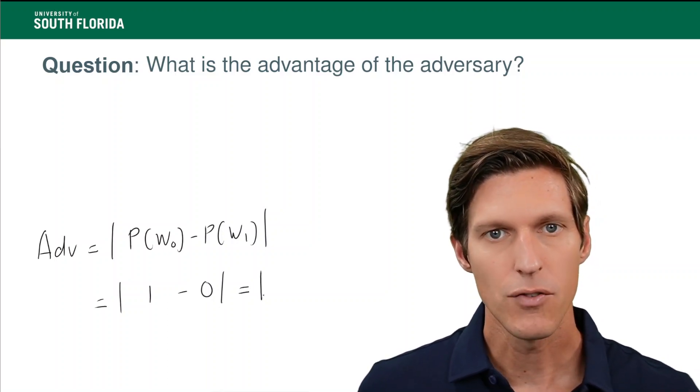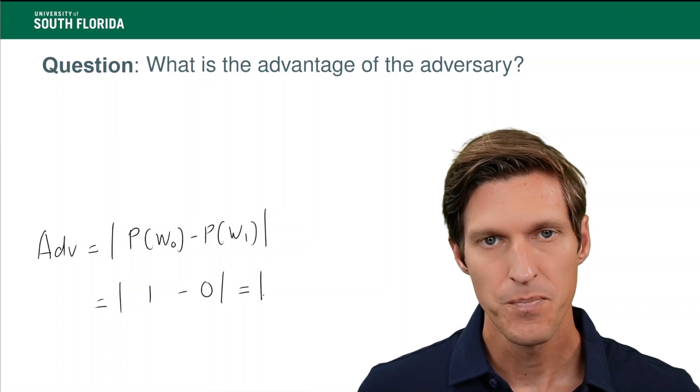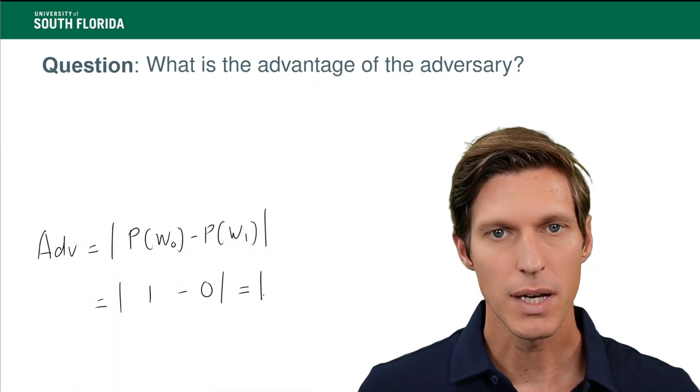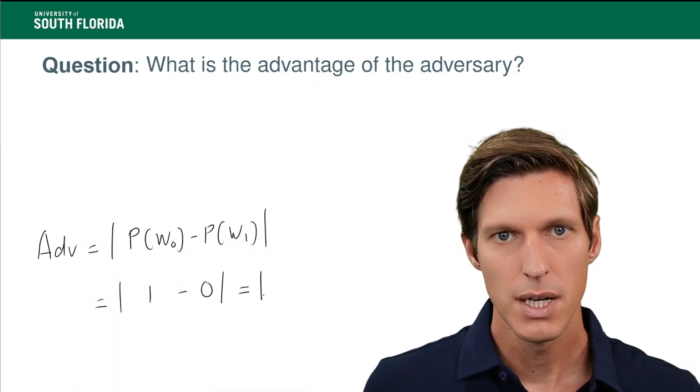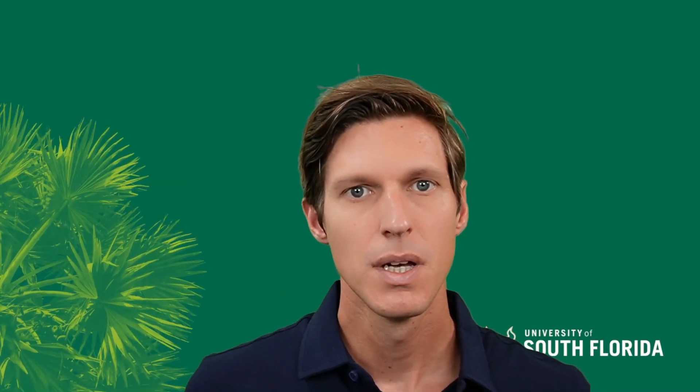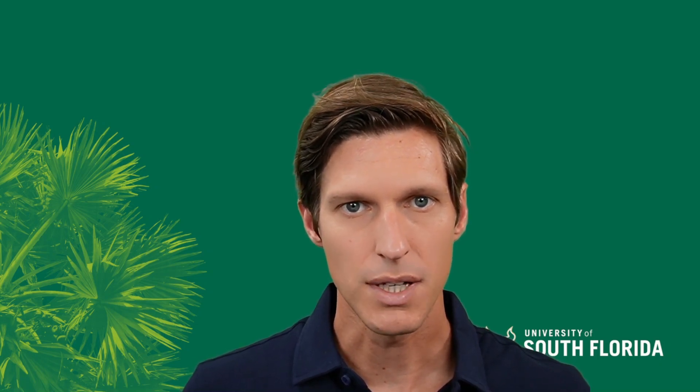So we have shown that the adversary is efficient at being successful, and so the stream cipher is not secure. Thank you very much for listening. Now you know how to calculate the advantage of a given adversary in the semantic security game.